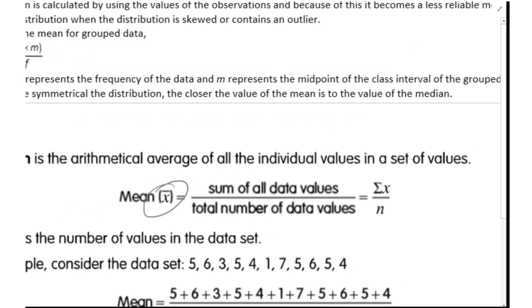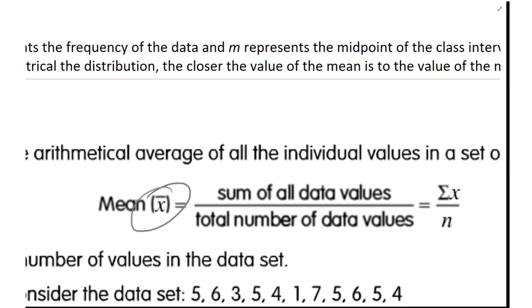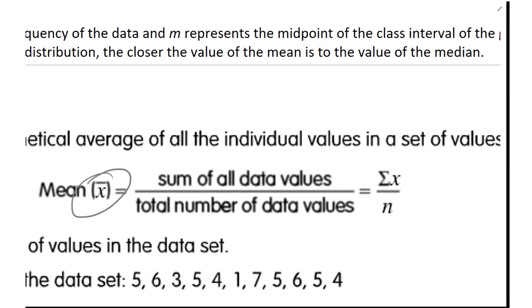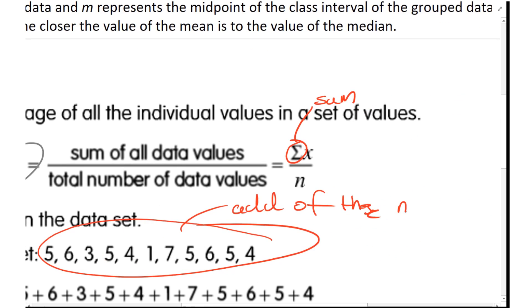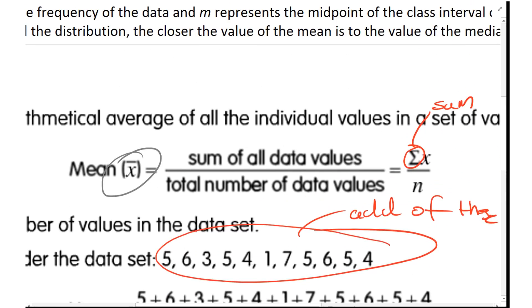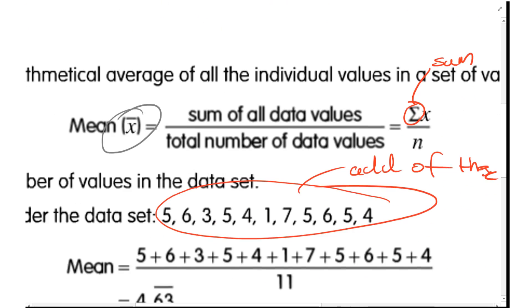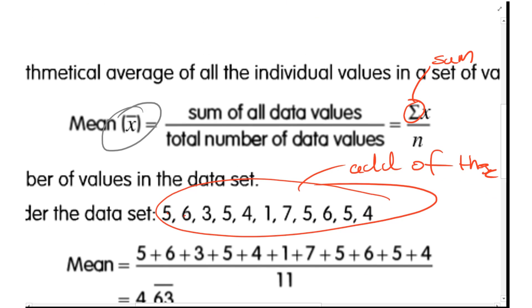We write it like that. Let's zoom in. It's the sum - this value means sum of all the data values. We add all these numbers up, which is what we're doing there, and then divide by the total number. So we count: 1, 2, 3, 4, 5, 6, 7, 8, 9, 10, 11, which is what they've done there.